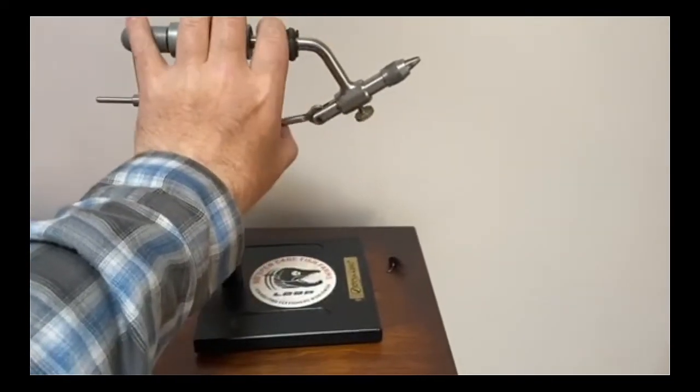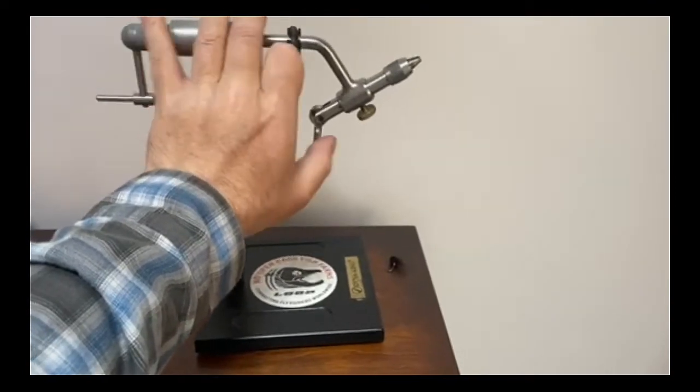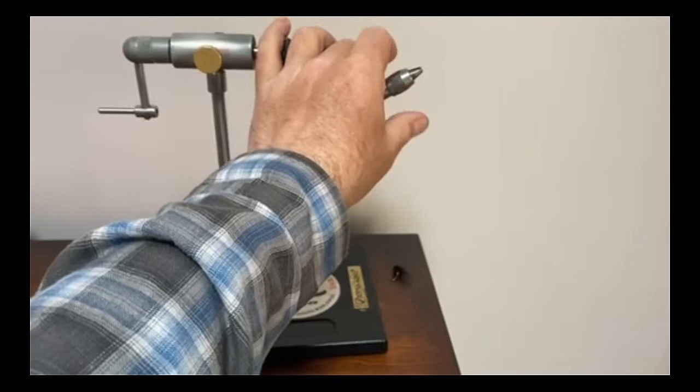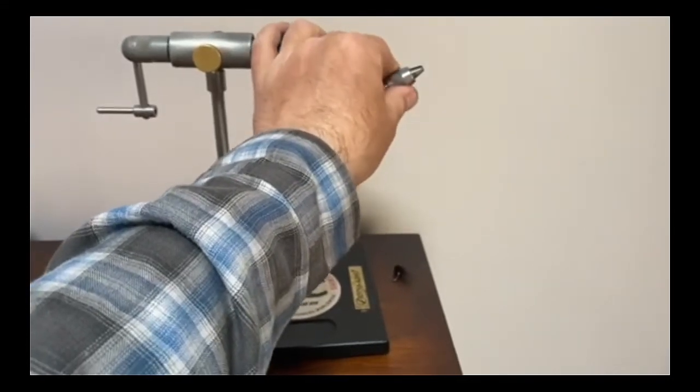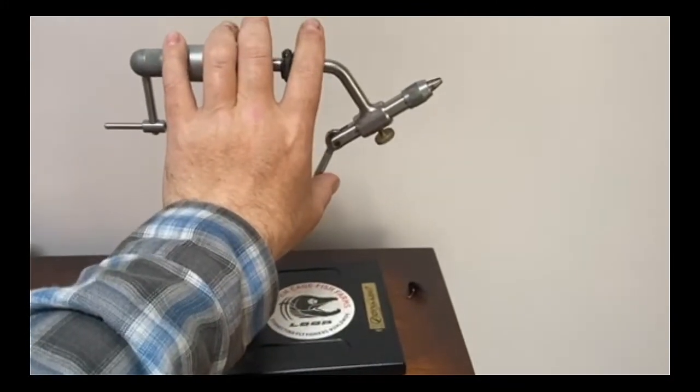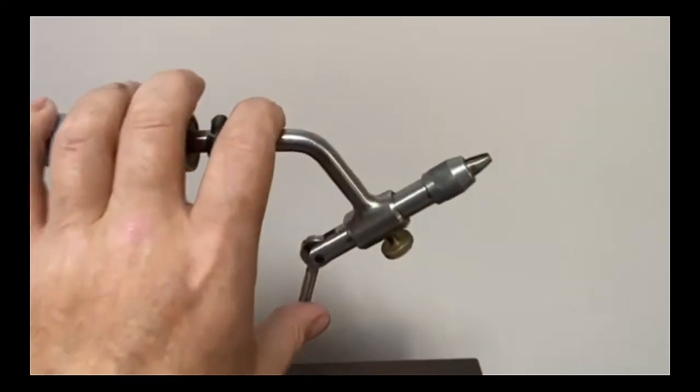So that just tightens and I can alter the lock there on the jaws just so that it's tight or loose to accommodate whatever size flies I tie.